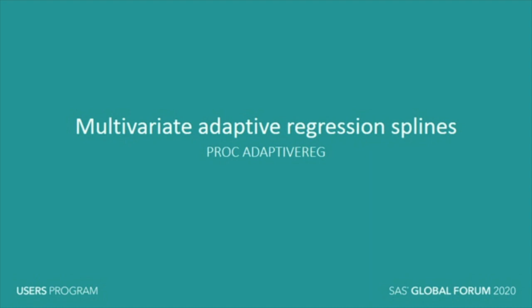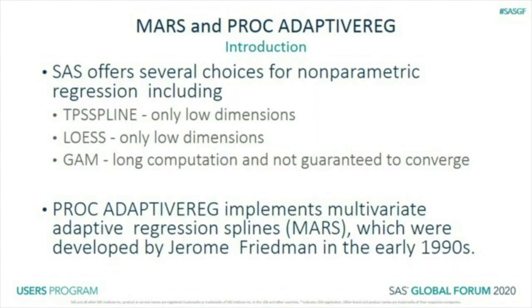Next is MARS — multivariate adaptive regression splines — with PROC ADAPTIVEREG. SAS has offered a few options for nonparametric regression for a long time, including P-splines and LOESS (only low dimensions) and GAM (no guaranteed convergence). ADAPTIVEREG implements MARS, developed by Jerome Friedman in the early 1990s. This is a prime example of computers having to catch up to methods, because MARS involves a multiply nested loop with a very complicated mathematical function in the innermost loop.